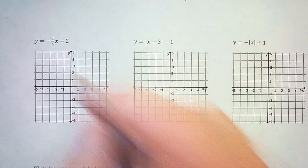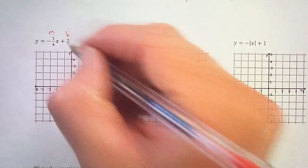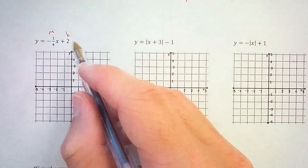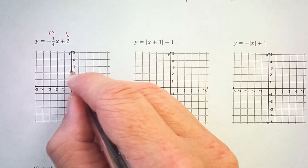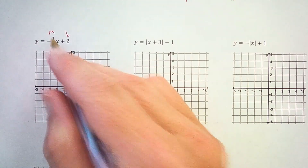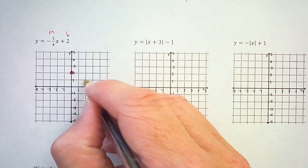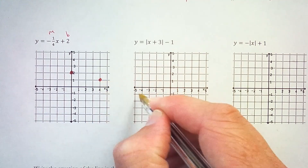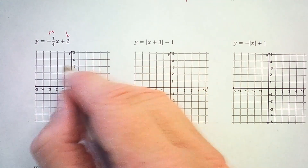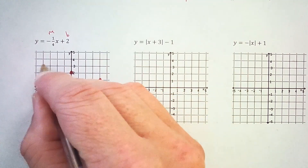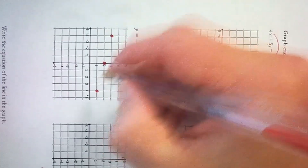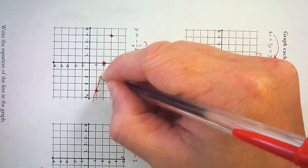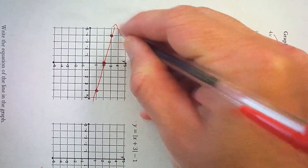Next we'll graph a line given its slope and y-intercept. The y-intercept is 2, so we plot a point up at 2. The slope is negative 1 fourth — down 1, right 4. We run out of room going that way, so we also go up 1 and left 4 to maintain the slope through the whole graph, and there's our line.